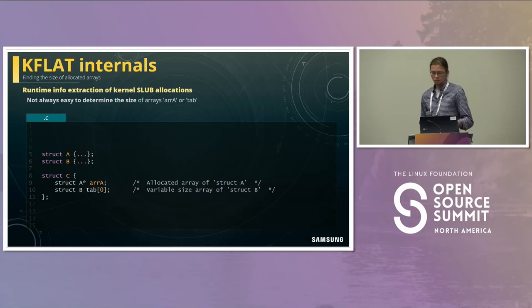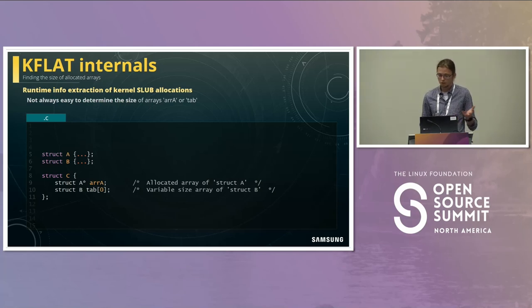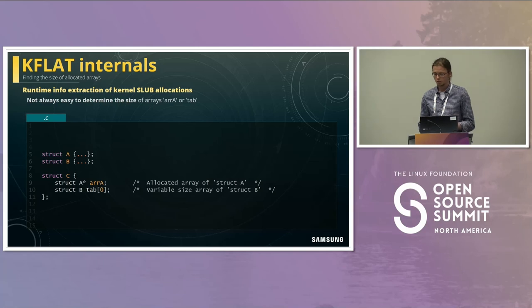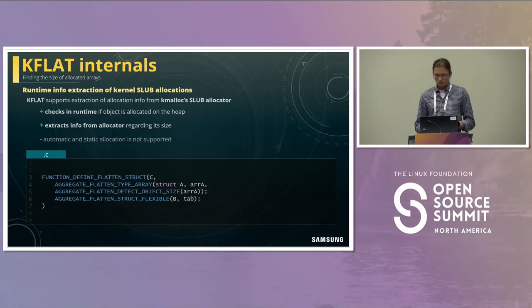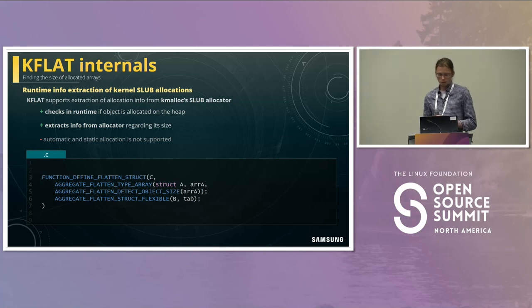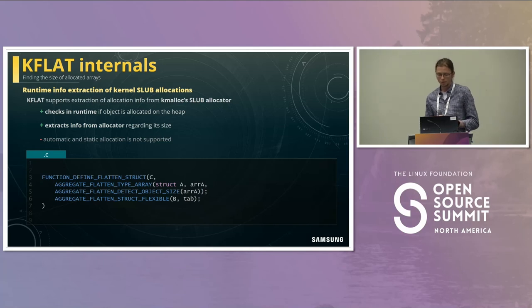Next, we have to handle unknown array sizes. In the kernel, you quite often see zero-size arrays or pointers to integers or structures of unknown size. It's not always obvious what the size of these objects is based solely on static analysis. So in KFLAT, we also support extraction of allocation metadata from the slab allocator. In cases when we are unsure of the target array size, we ask the slab allocator to provide information about allocation size and dump the whole array of objects, even if we don't know its size at compile time.